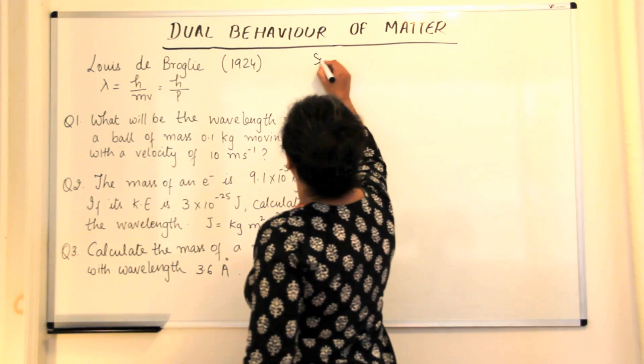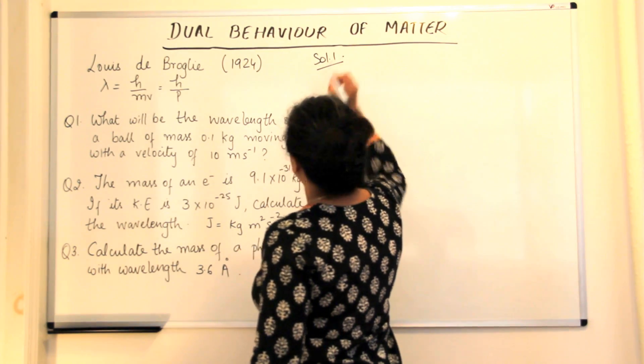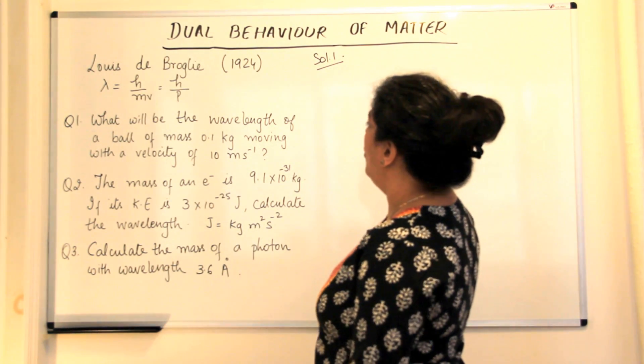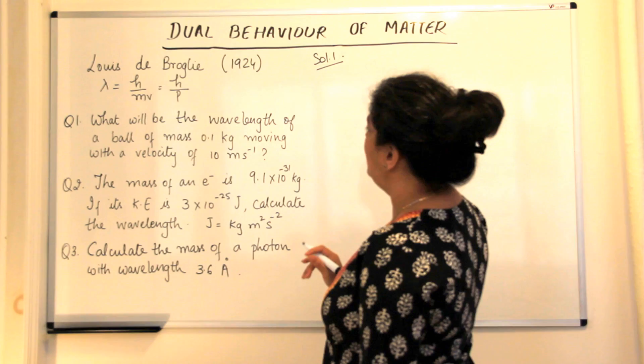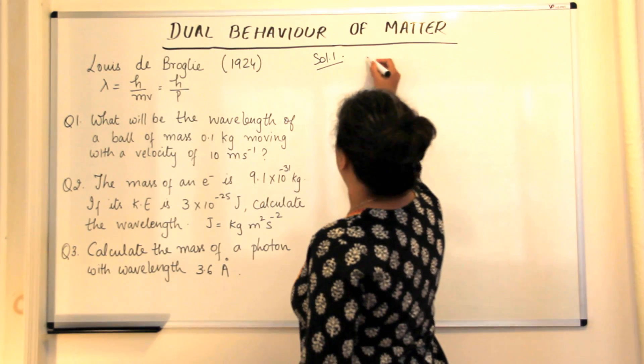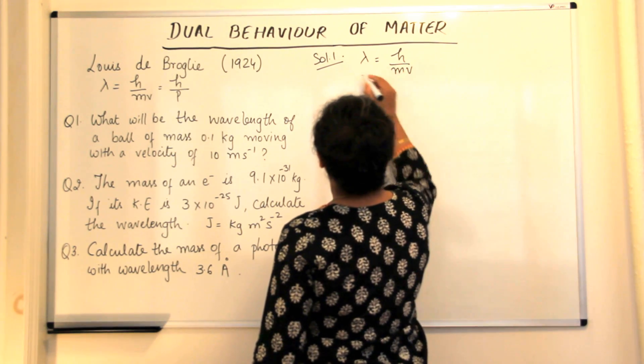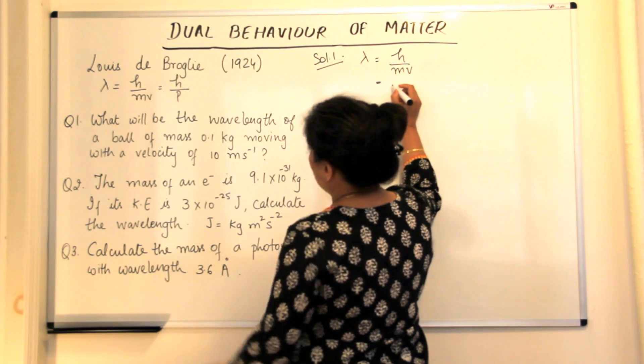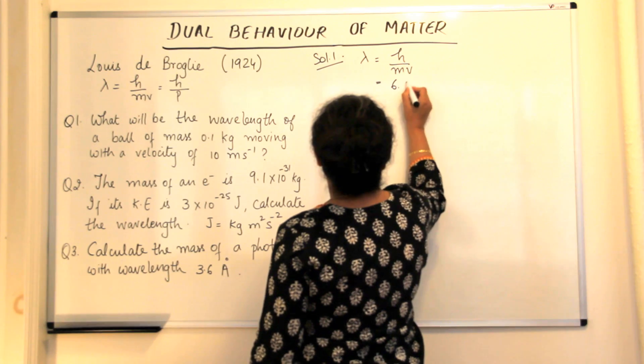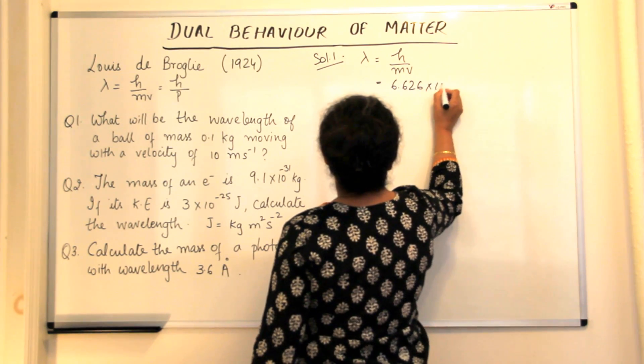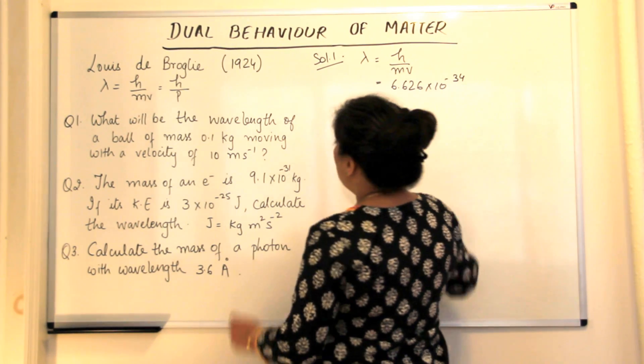So we're doing solution one now. There is a ball, you have to calculate the wavelength of a ball whose mass is given and velocity is given to us. Wavelength is equal to h over mv where h is the Planck's constant which is 6.626 into 10 to the power minus 34 joule second.